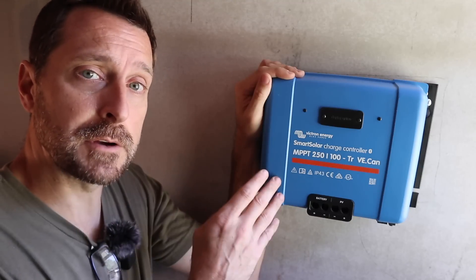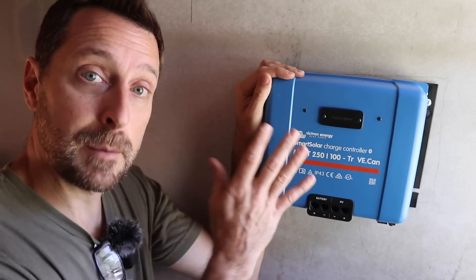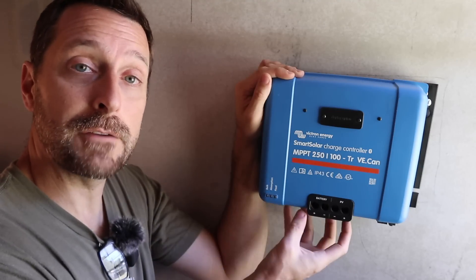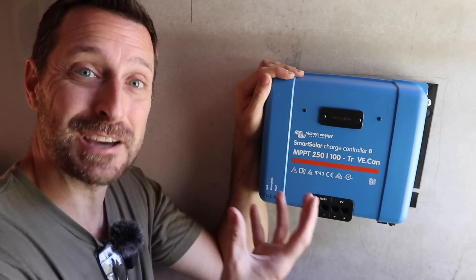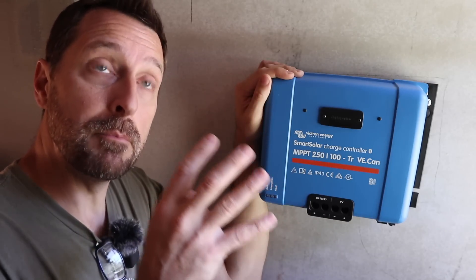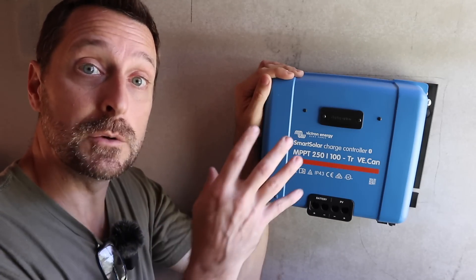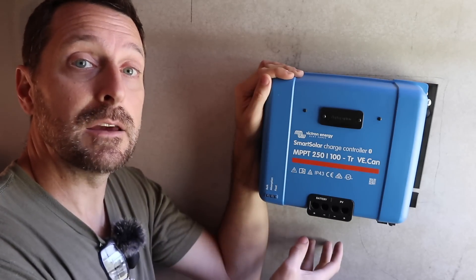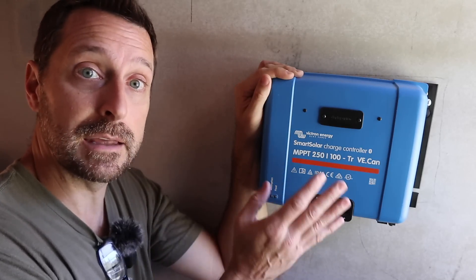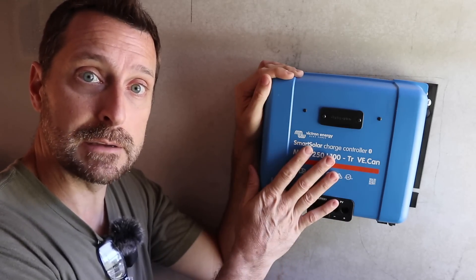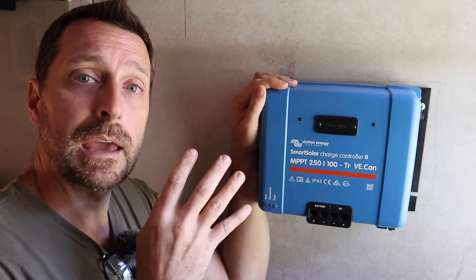Now, here's another challenge with the Victron system, is that the MPPTs do not have anywhere on the MPPT itself to connect conduit. So maybe it's just running conduit through most of the building until you get to this point. And then right here, cutting it off the conduit and just running the wires out the end into the MPPT. And that's what I've seen done in a few cases.